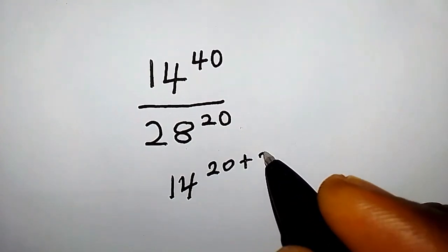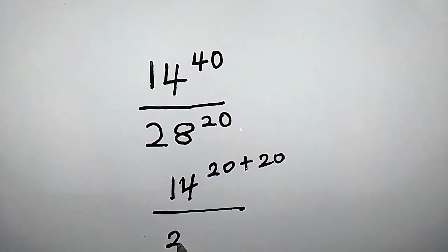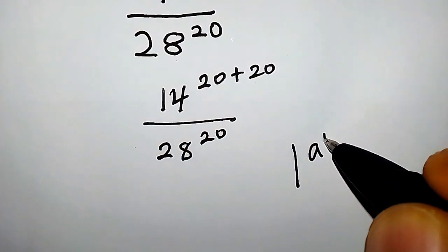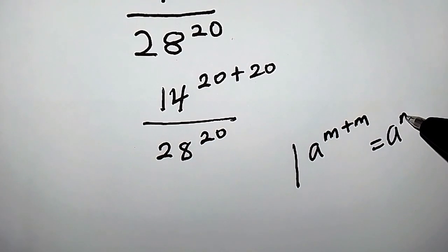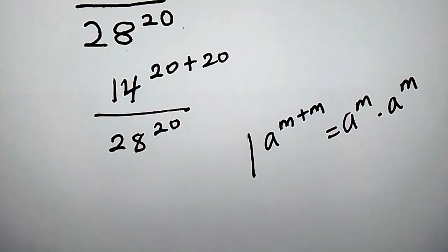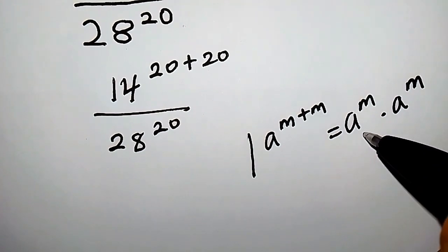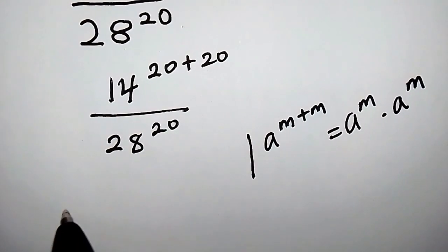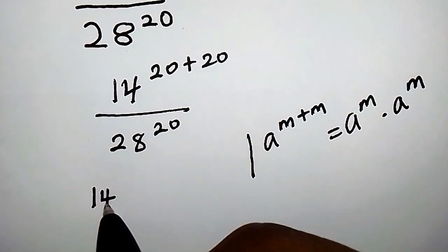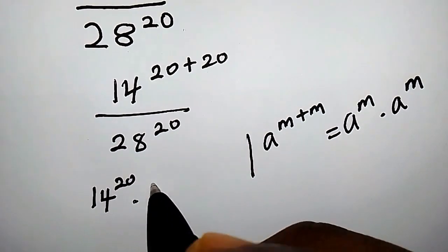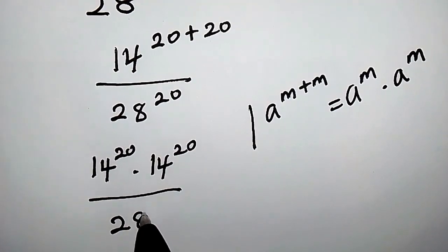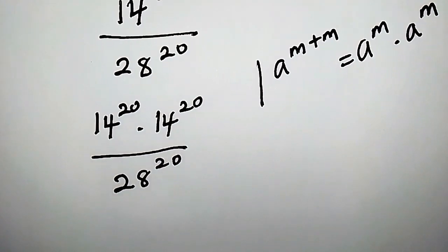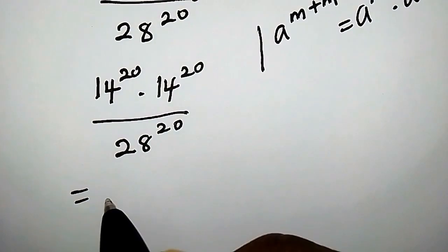14 to the power of 40 can be written as 14 to the power of 20 plus 20, over 28 to the power of 20. Recall that a to the power of m plus m equals a to the power of m times a to the power of m. Using this property for the numerator, we get 14 to the power of 20 times 14 to the power of 20, over 28 to the power of 20.